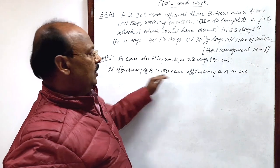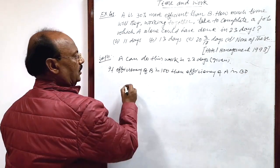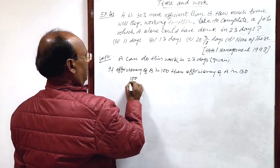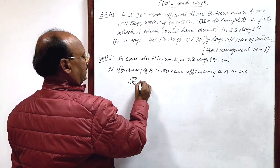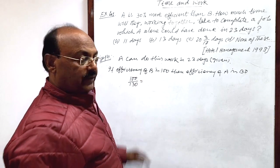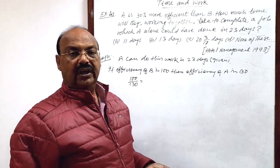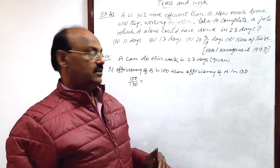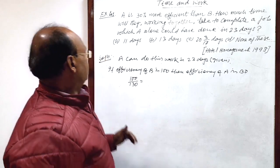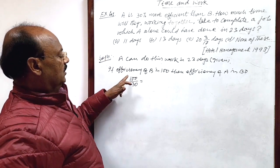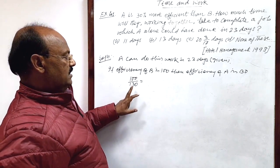And ratio of efficiency means 100 by 130. If efficiency is more, number of days required will be less. So this is efficiency of B by efficiency of A.